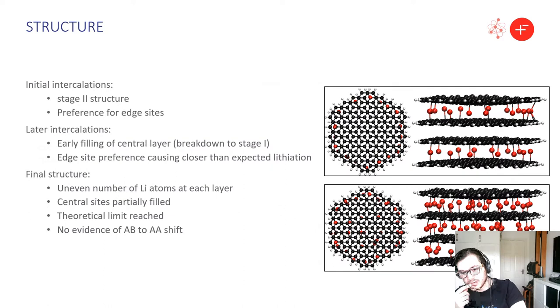Let's look at some of the structures that we produce by applying this method. With initial intercalations we ended up getting a stage two structure with our nanoparticle. This is again unbiased as we showed with the bulk but there were some drawbacks.